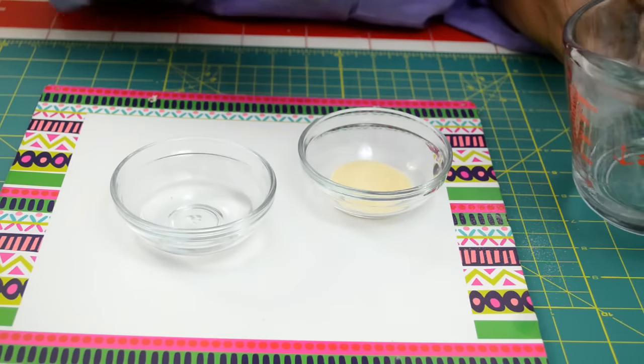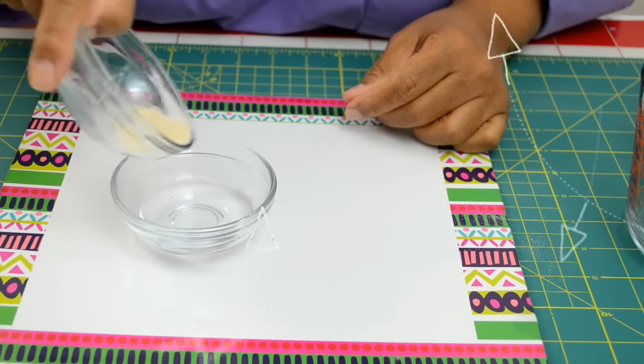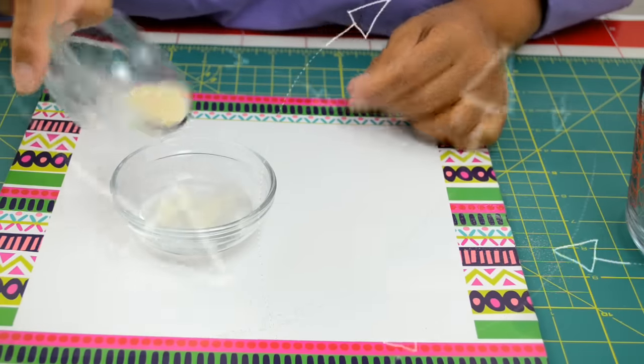Let's start by hydrating the gelatin. Sprinkle gelatin over 2 tablespoons of water and let it sit for 5 minutes.